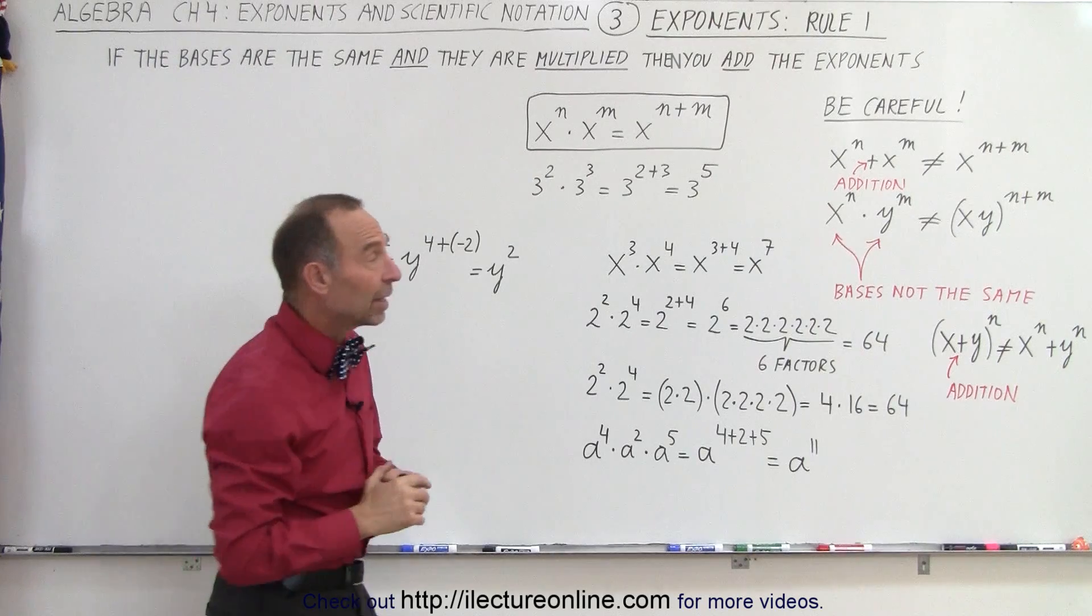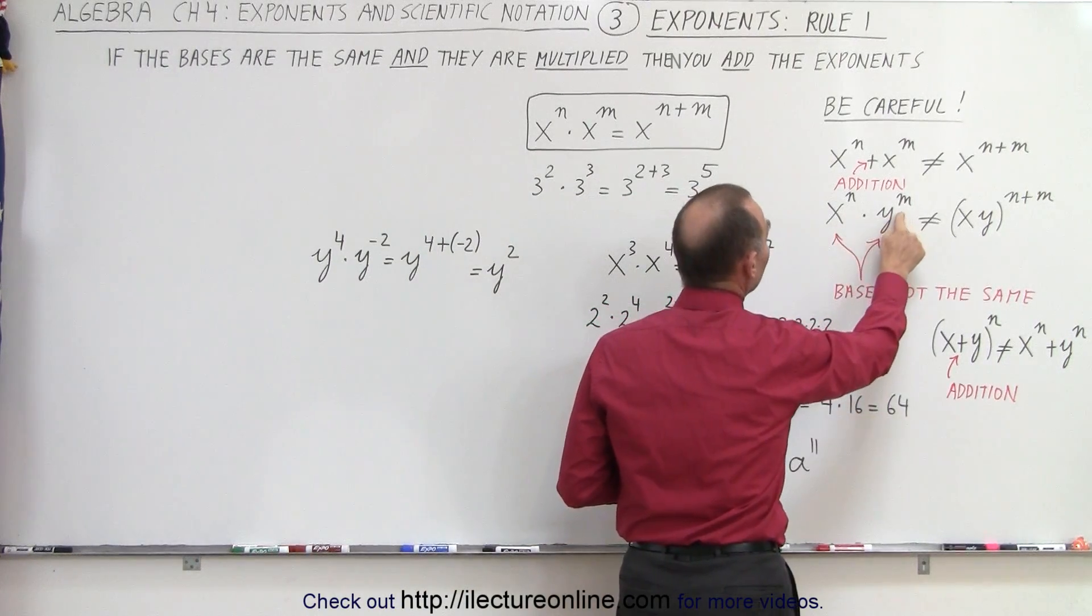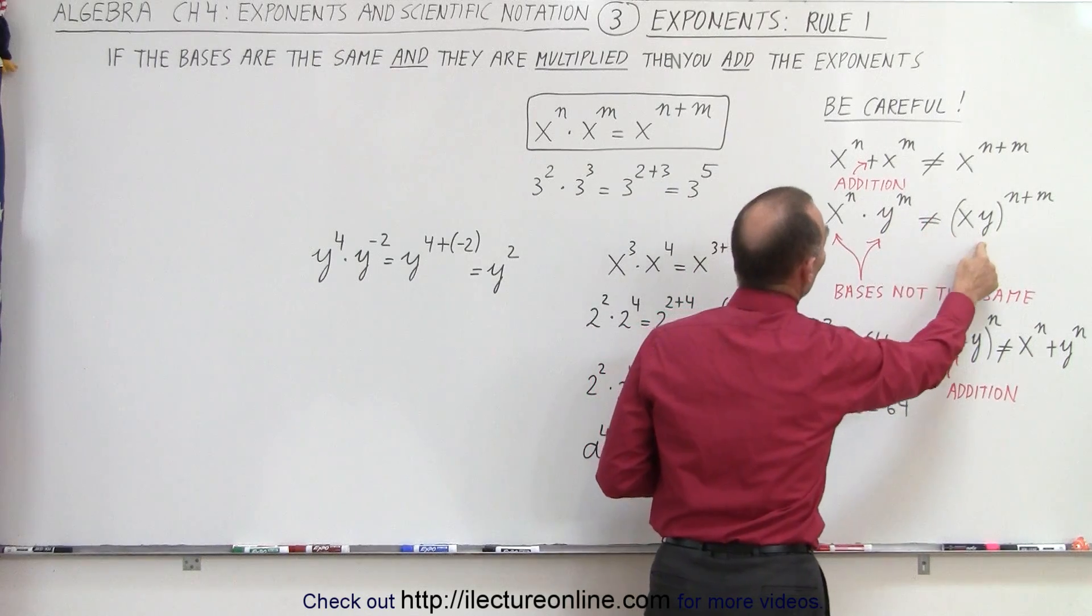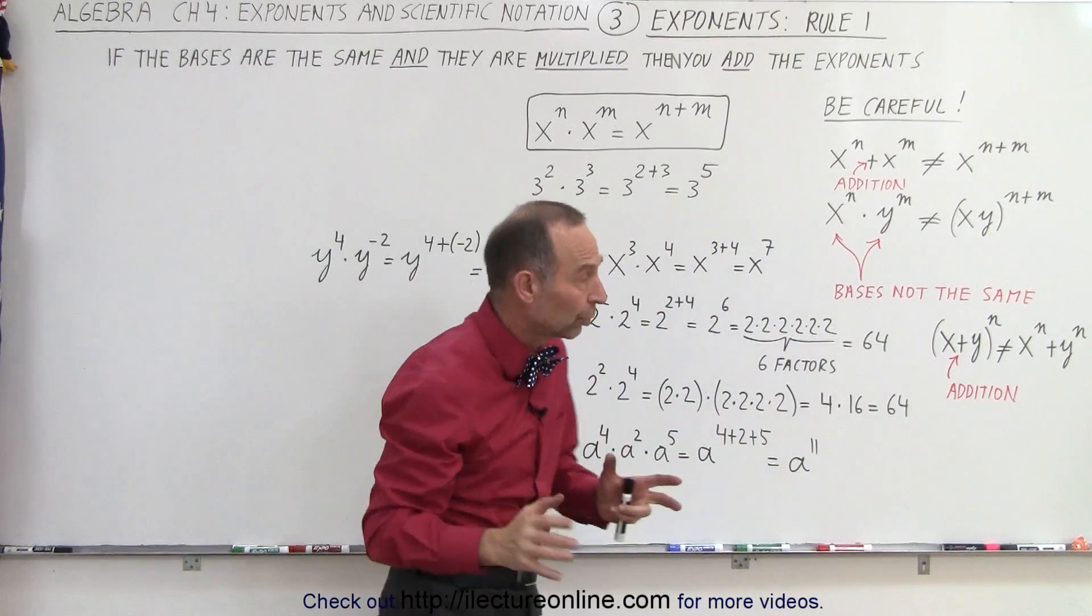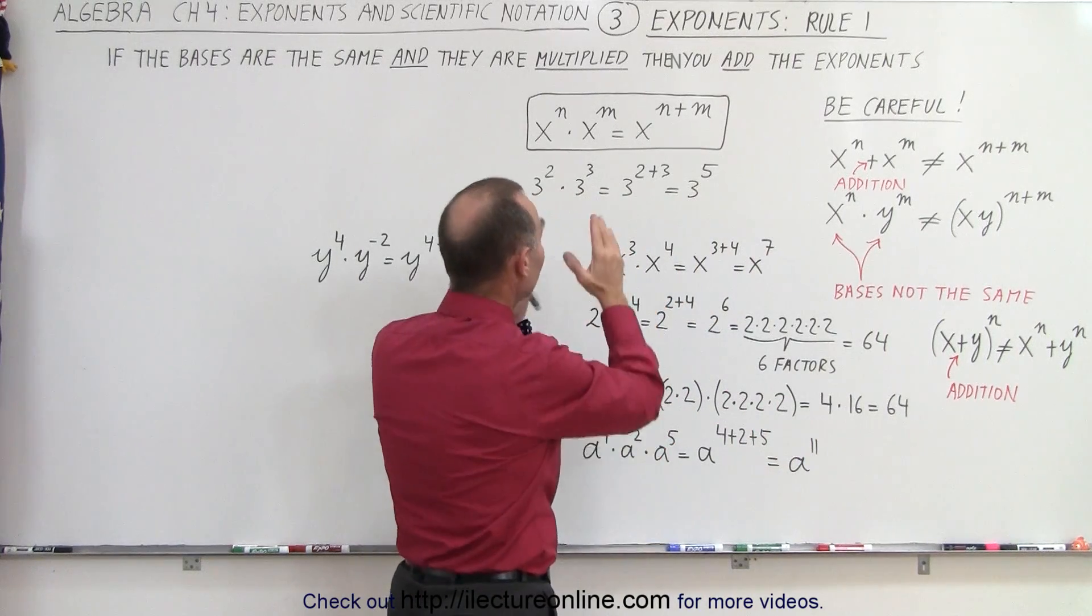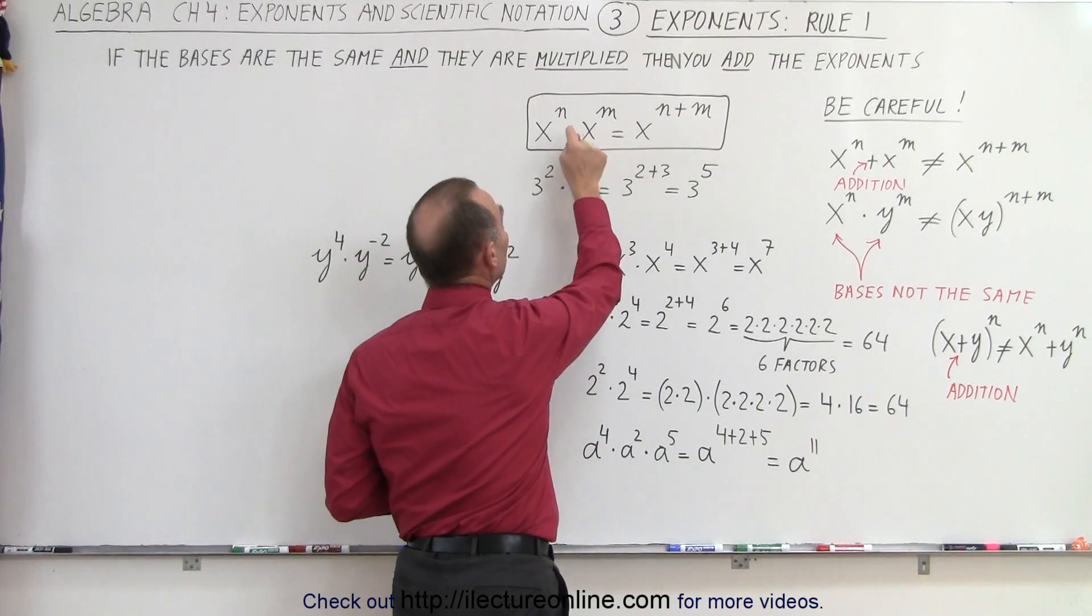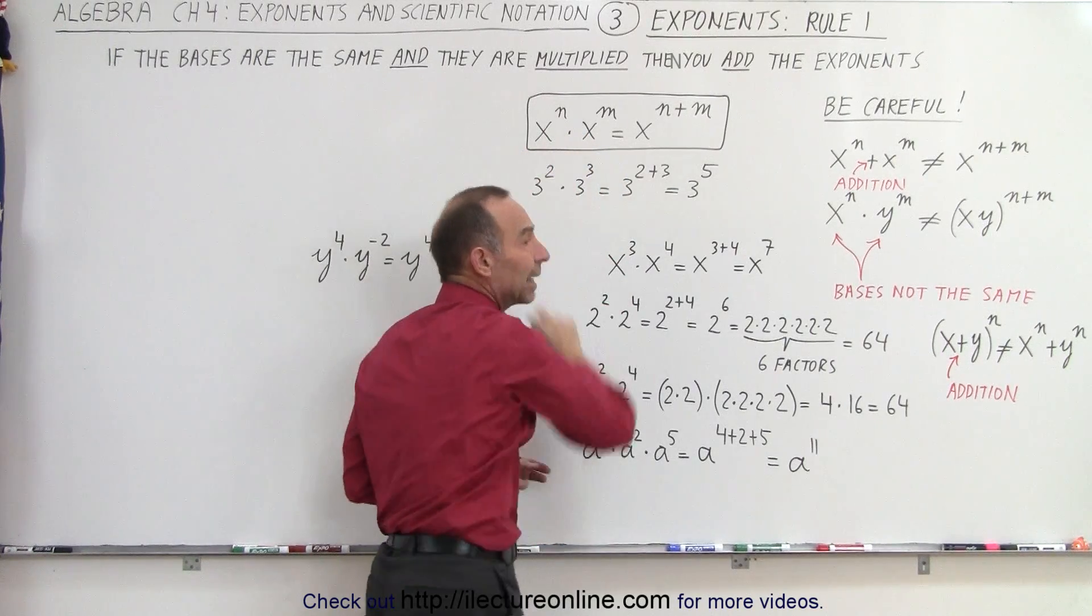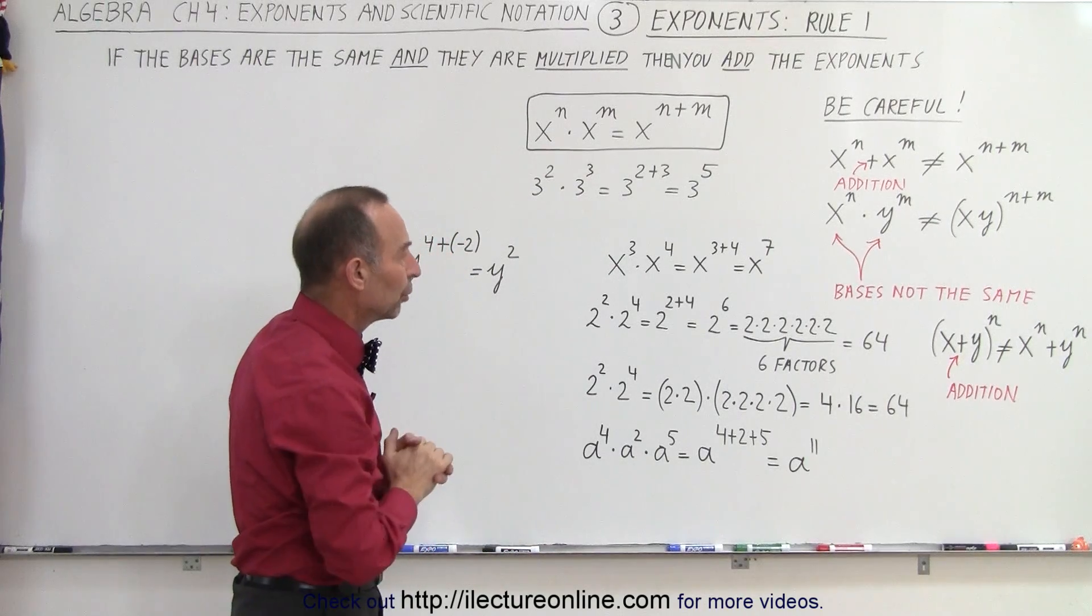The next mistake that we make often is when we have x to the n times y to the n. That is not equal to x times y to the n plus m because here the bases are not the same. Remember, those are the rules. In order for us to use that rule, the bases must be the same and we must multiply. Otherwise, you cannot use that rule.